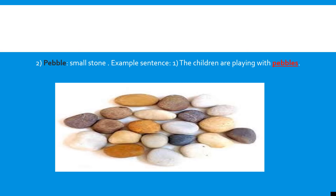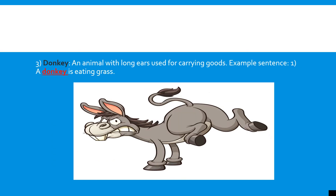Our next word is donkey. Meaning of the word is an animal with long ears used for carrying goods. For example, the sentence is: A donkey is eating grass. The spelling is D-O-N-K-E-Y. Donkey.